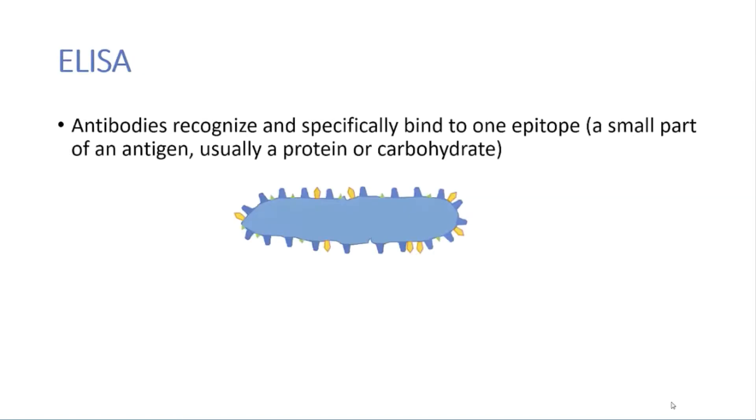ELISA is based on the principle that antibodies recognize and very specifically bind to only one epitope. An epitope is a very small part of an antigen, usually a protein or a carbohydrate. For example, this bacterium here has proteins on the outer surface, and antibodies will specifically recognize only one type of protein. Note that even when the bacterium dies and breaks apart, the antibodies can still recognize the individual protein pieces.